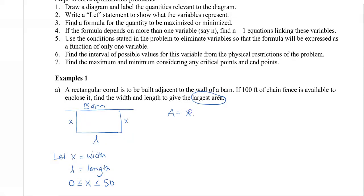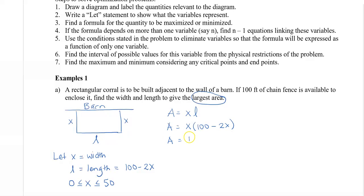The area is A = x times l. We want only one variable, so we write l in terms of x. The total fence used goes around all sides, so l = 100 minus 2x — we start with 100 feet and subtract the two x sides, and what's left is the length. Substituting, we get A = x(100 − 2x) = 100x − 2x².